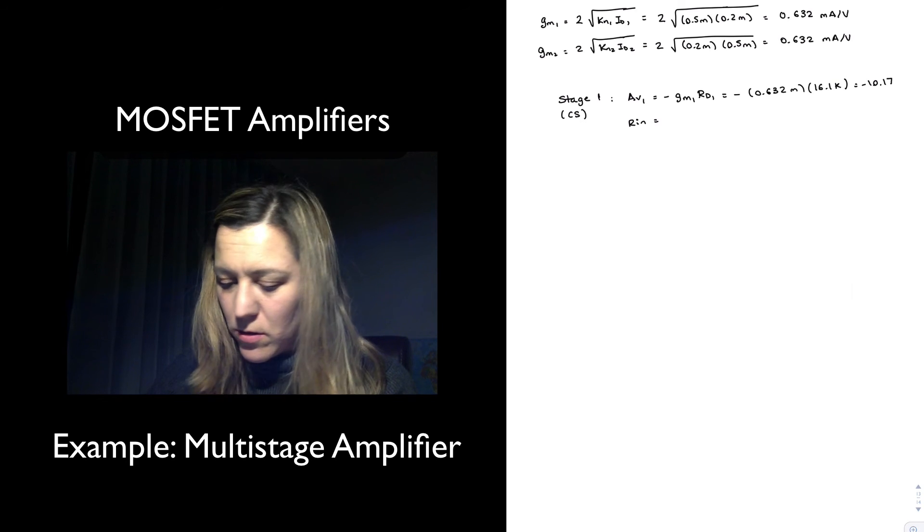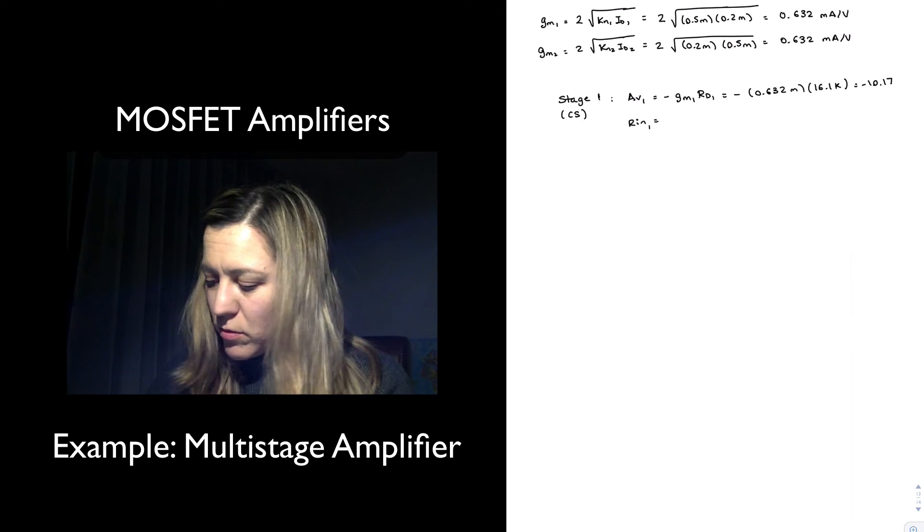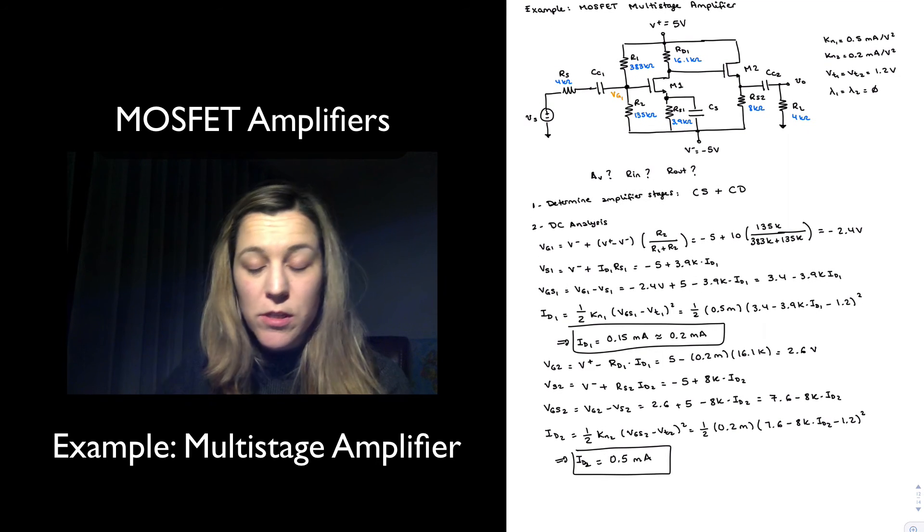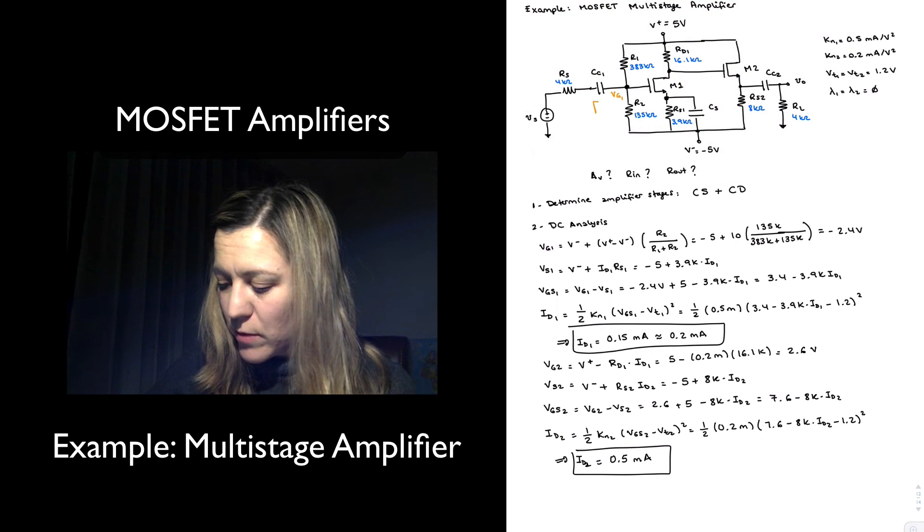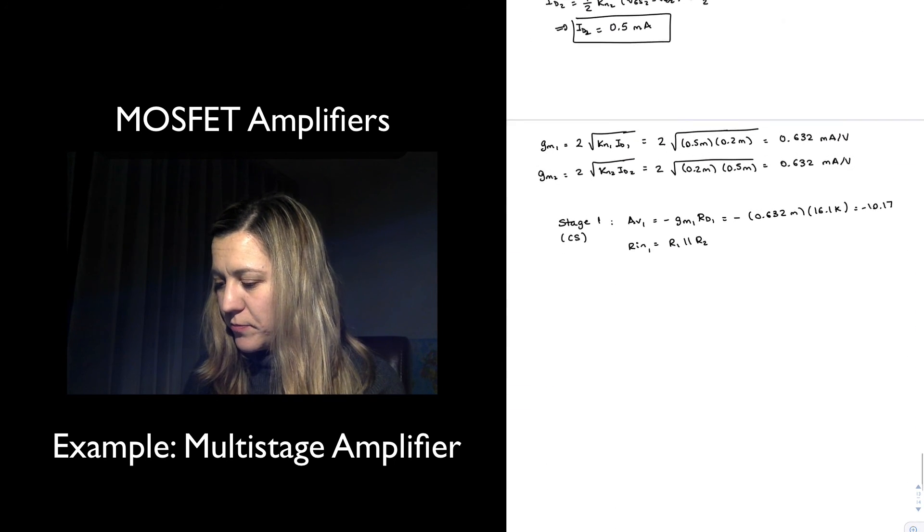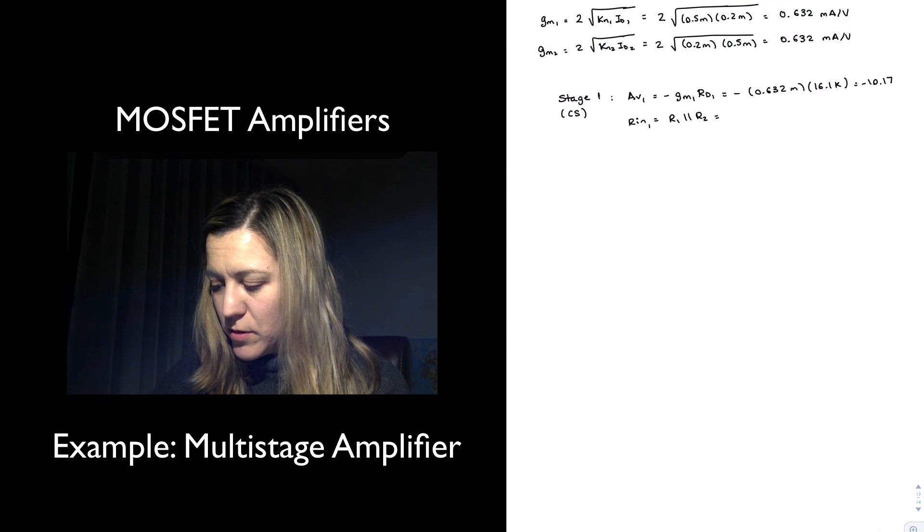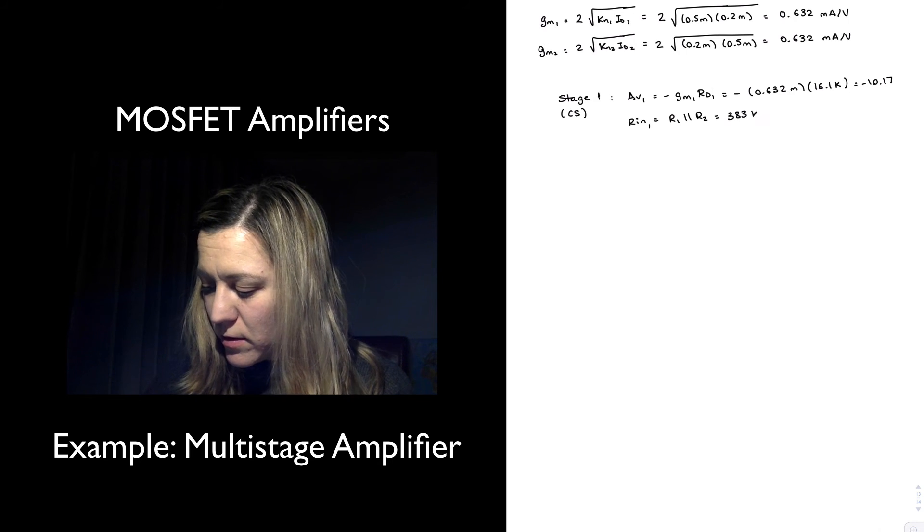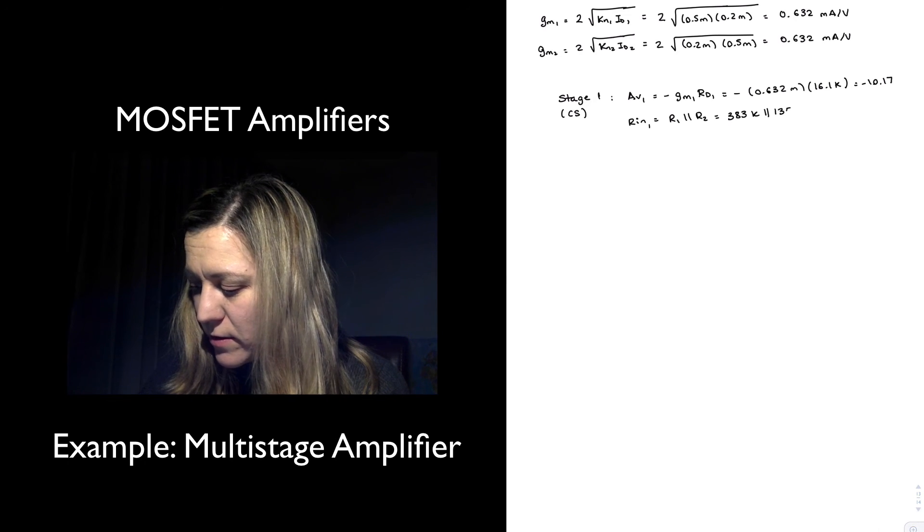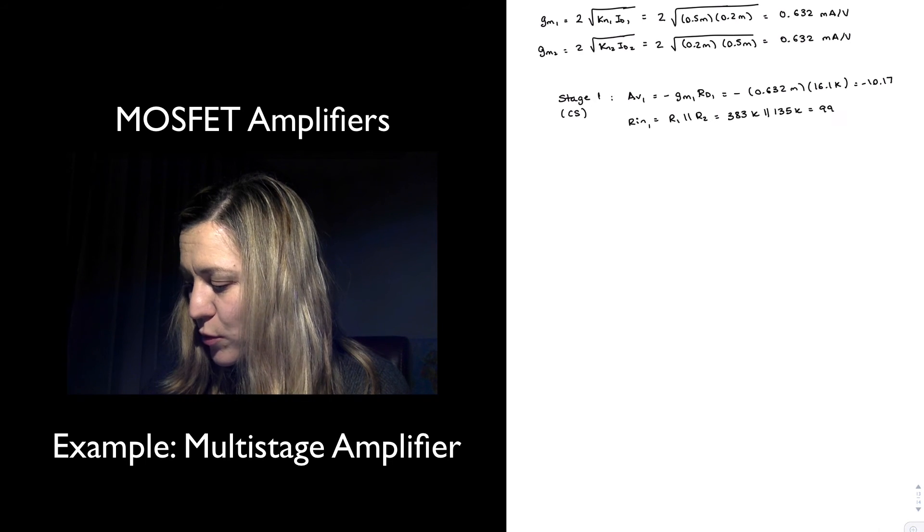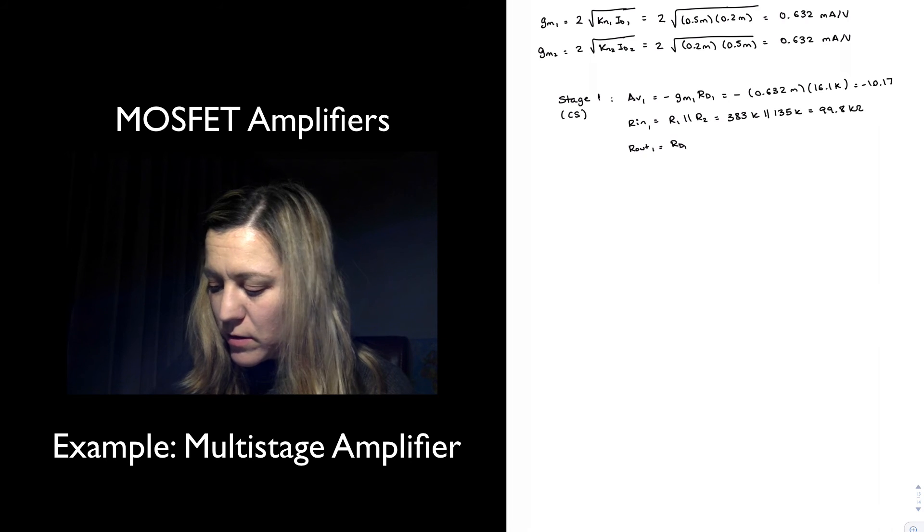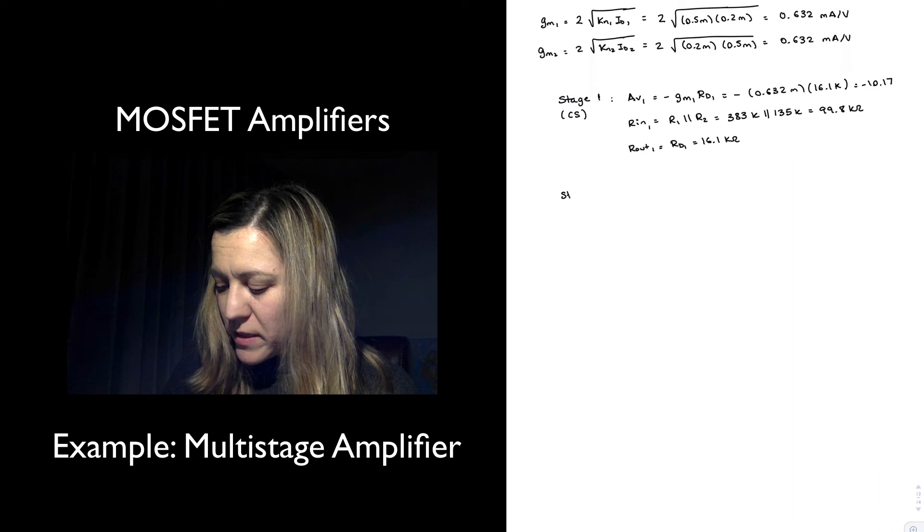My Rin for stage 1 is equal to R1 in parallel with R2. We go back to our circuit: R1 in parallel with R2, since the resistance looking into the gate is equal to infinity. This is going to be my Rin1, which is also the input resistance of the overall circuit. Essentially 383k in parallel with 135k, which is 99.8k ohms, so close to 100k ohms. My Rout1 is RD1, or 16.1k ohms.